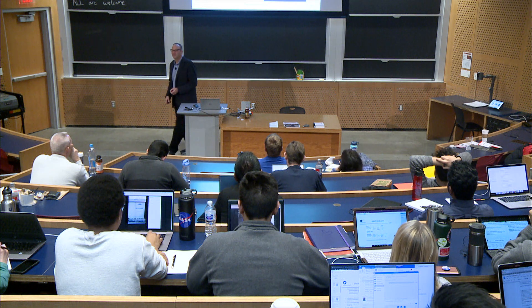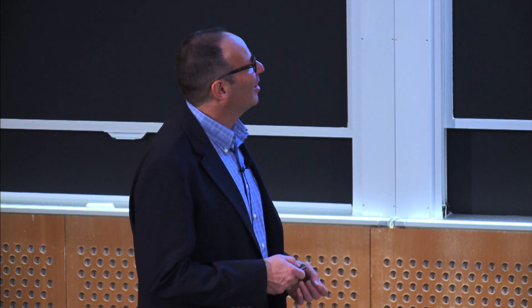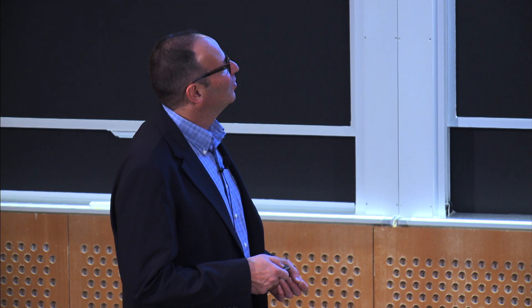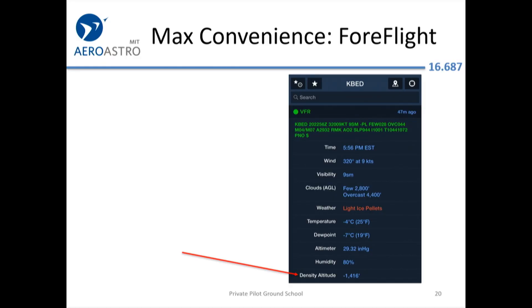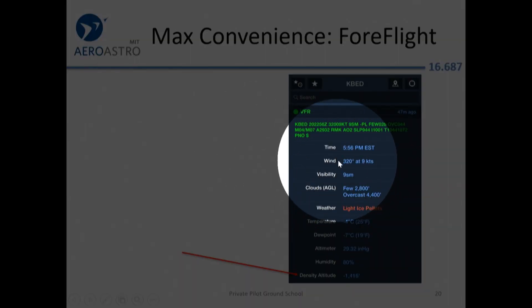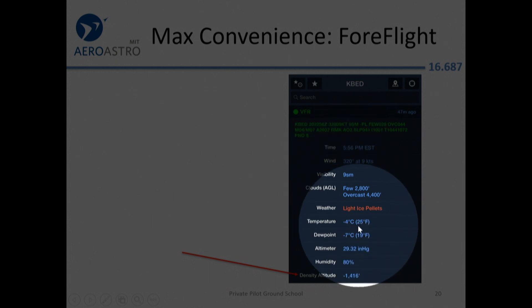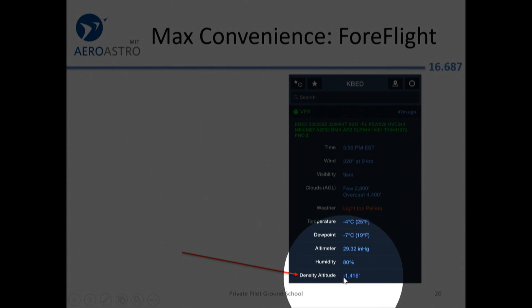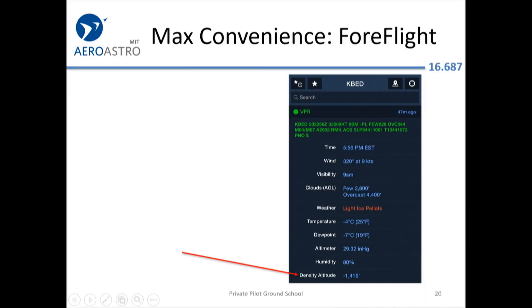The most convenient way to get density altitude is with apps. ForeFlight, for example, will just tell you the density altitude. One Sunday night at Bedford — approximately 130 feet above sea level — it was minus 4 degrees, and the density altitude was minus 1,400 feet. We were effectively flying like skimming the surface of the Dead Sea in terms of performance — the airplane really climbs better than the book numbers all wintertime.